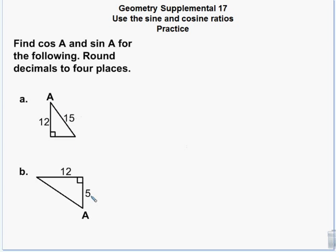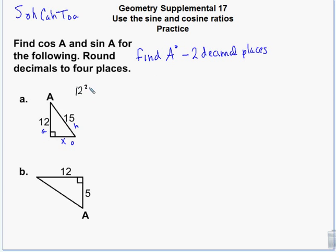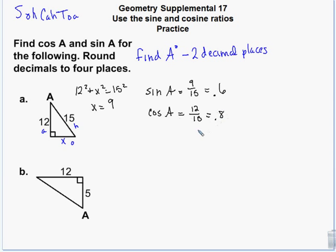We're going to find the sine and cosine for angle A, and then find the measure of angle A in degrees using either sine or cosine with an inverse function. Using the Pythagorean theorem: 12 squared plus x squared equals 15 squared, giving x equals 9. So the sine of A is 9 over 15, which is 0.6, and the cosine of A is 12 over 15, which is 0.8. You can use either inverse sine of 0.6 or inverse cosine of 0.8 to get A, which equals 36.87 degrees.